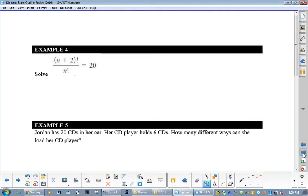Okay. Now, also could be given it to us in this way. Now, which one's bigger? The top or the bottom in this case? The top. So, this would be n plus two times n plus one times n factorial all over n factorial. This equals 20.